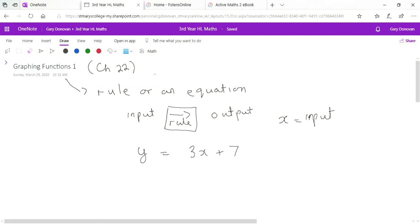Generally, x values are our input values and y values are our output. An example for this function might be: let x equal 2, so this is our input. When x equals 2, y equals 3 times 2 plus 7, so y equals 13, and that's our output.